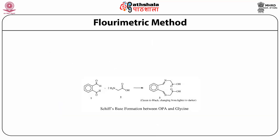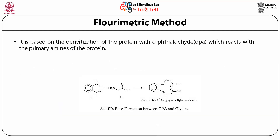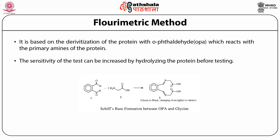We discuss the fluorimetric method. It is based on derivatization of protein with o-phthalaldehyde (OPA), which reacts with the primary amines of the protein. The sensitivity of the test can be increased by hydrolyzing the protein before testing. You can see here the Schiff base formation between OPA and glycine.